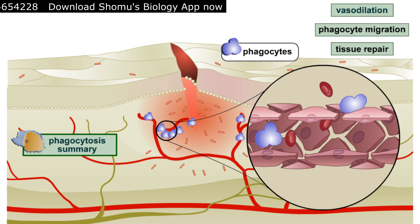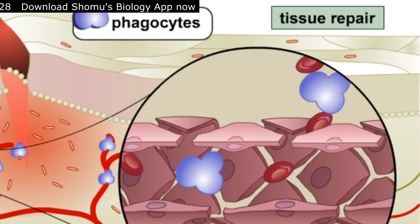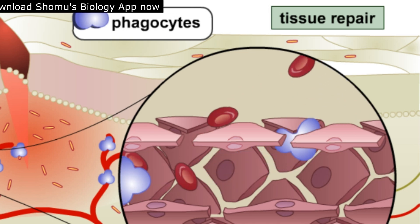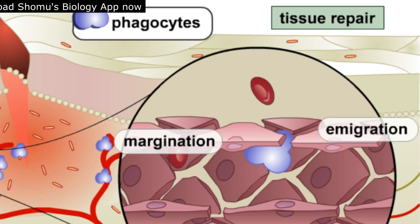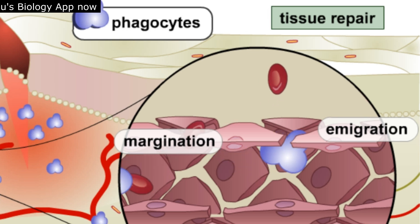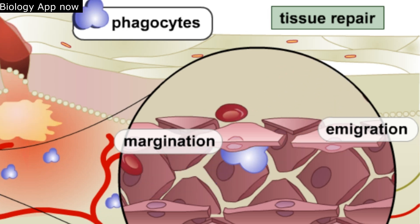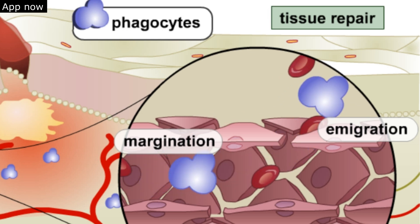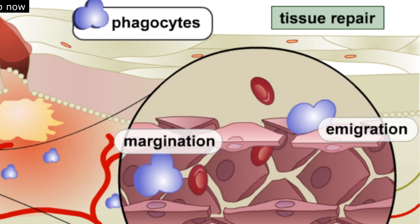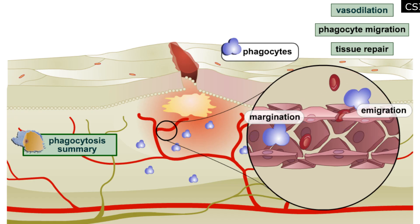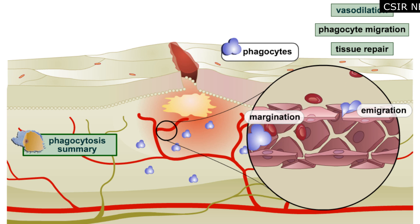The next step is phagocyte migration. The increased blood flow delivers phagocytes such as monocytes and neutrophils to the scene. The phagocytes stick to the wall of the blood vessel in a process called margination, then squeeze through the gaps between the cells in a process called immigration and diapedesis. Within about an hour of tissue damage, the phagocytes begin to destroy the invading microorganisms by phagocytosis. After engulfing large numbers of microorganisms and damaged tissue, the phagocytes die, forming pus.